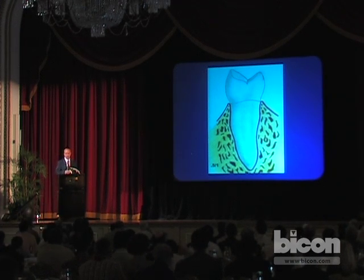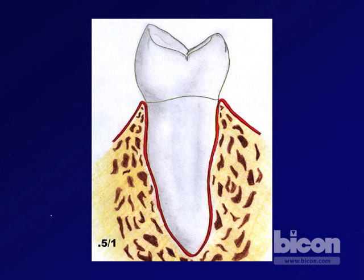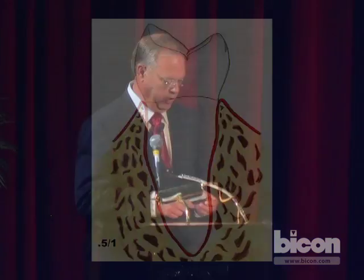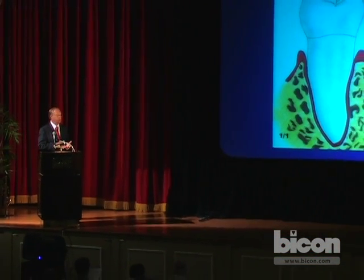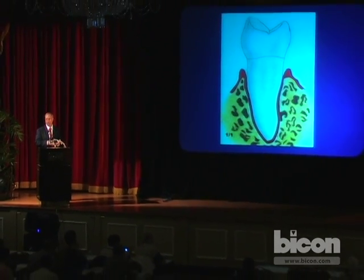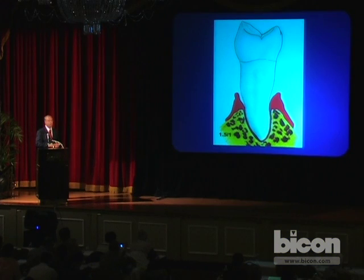The crown root ratio is one of those prognostic indicators. When the crown of the tooth — defined as that portion outside of the bone — is one-half the length of the root, the crown root ratio is 0.5 to 1. All normal healthy natural teeth have a crown root ratio of 0.5 to 1. When the crown equals the length of the root, we have a ratio of 1 to 1, and most clinicians would assign an unfavorable prognosis to a tooth in this condition.